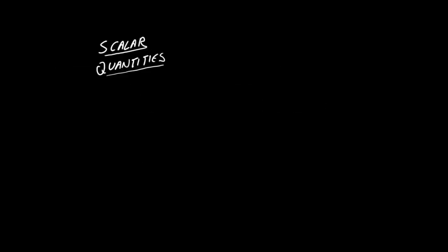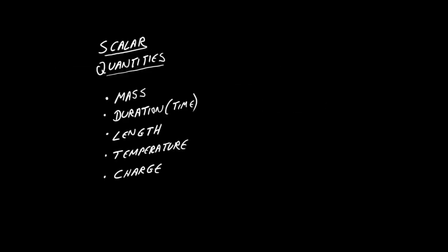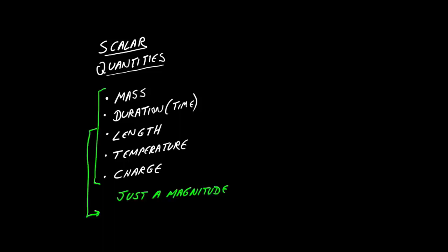Let's begin at the beginning by listing some scalar quantities. Think about mass, duration, length, temperature, charge. These physical quantities are all well described with a single number — they just have a magnitude, although some may go negative, so it's a magnitude and a sign. Just a simple number is adequate to describe these things.